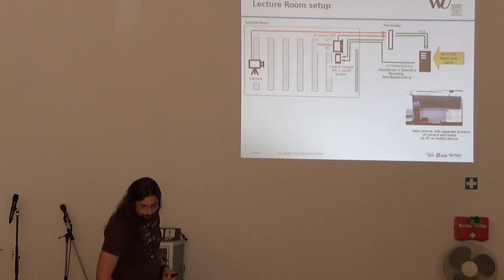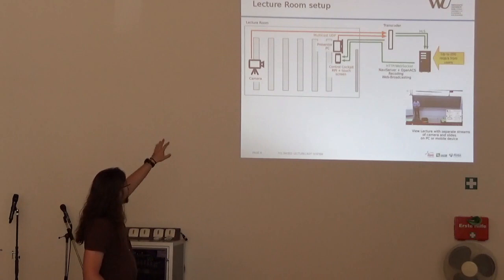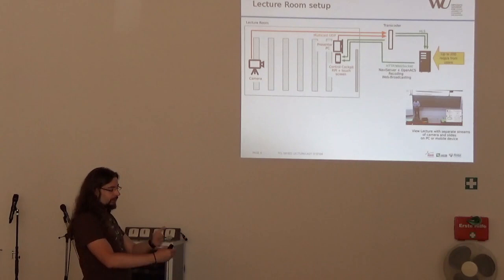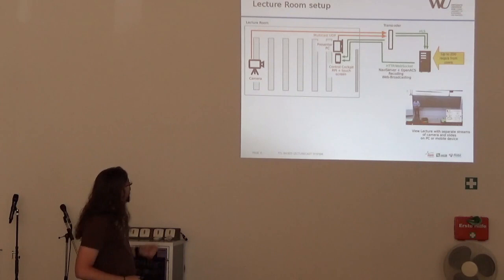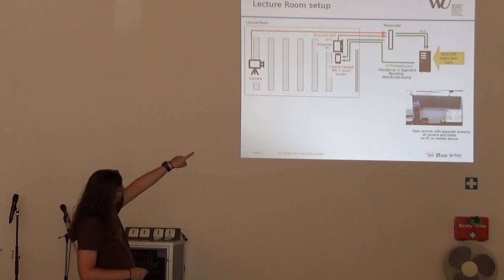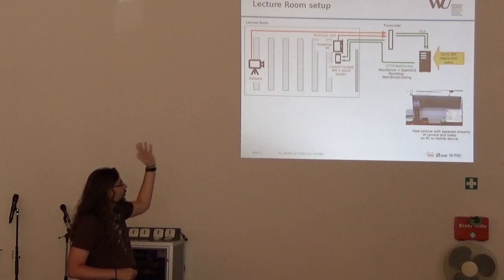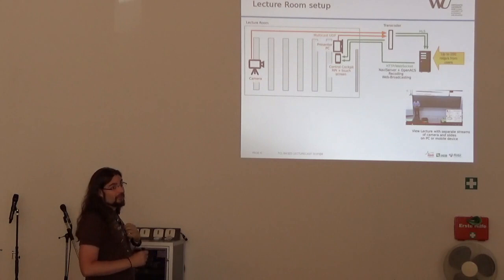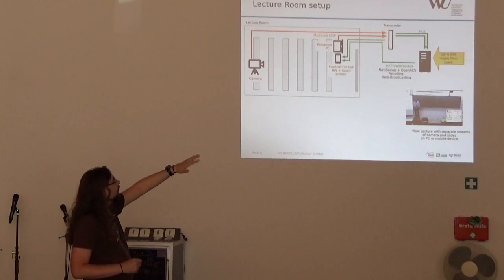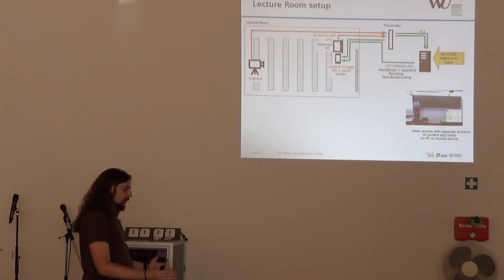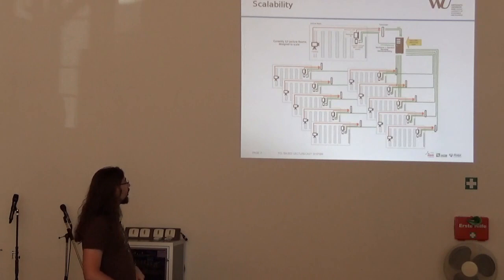This is a diagram of the setup for one of the rooms. We have the camera, the PC, this small control cockpit which is basically a touchscreen with some embedded Linux box to control with a browser interface. This receives the MJPEG preview with an integrated web interface. We have a transcoder for every single stream, physical transcoder for every single stream. I will talk about the transcoder cluster later. And then we have the Navi server and OpenACS recording web broadcasting server, which will be more or less the brain of all of this. This is a graph of basically the whole thing with the 12 rooms.